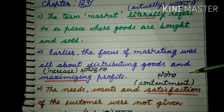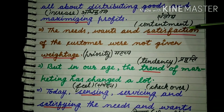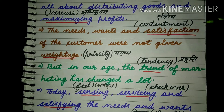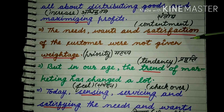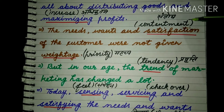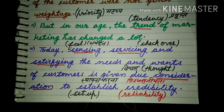The needs, wants and satisfaction of the customer were not given weightage. Needs यानि आवश्यकता, wants यानि चाहना, and satisfaction यानि संतोष — किसी customer को satisfy करना। पहले जो भी customer की needs थीं, wants थीं, उसका satisfaction था, उसके बारे में ध्यान नहीं देते थे।